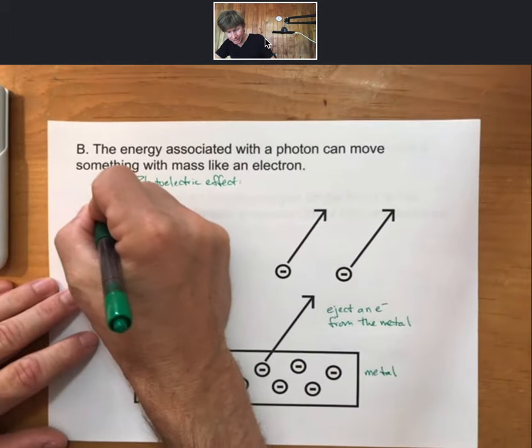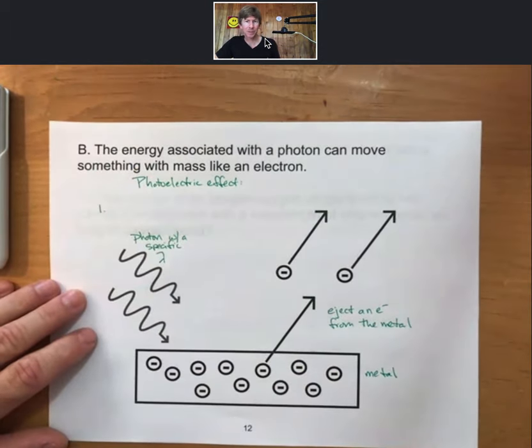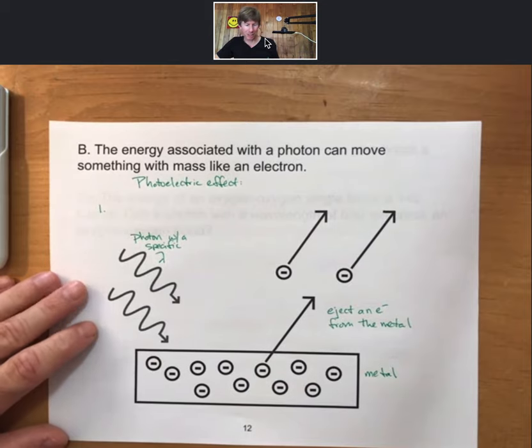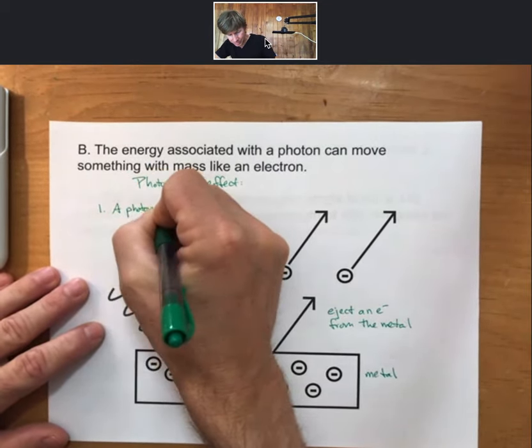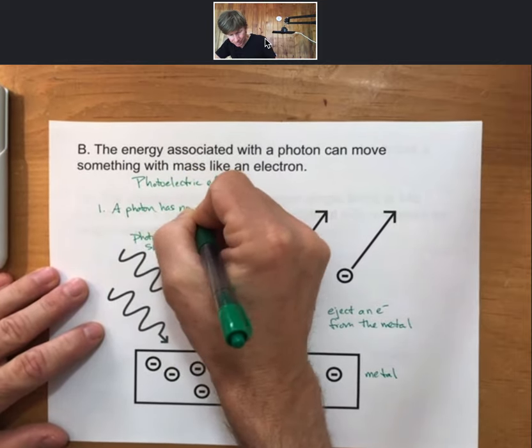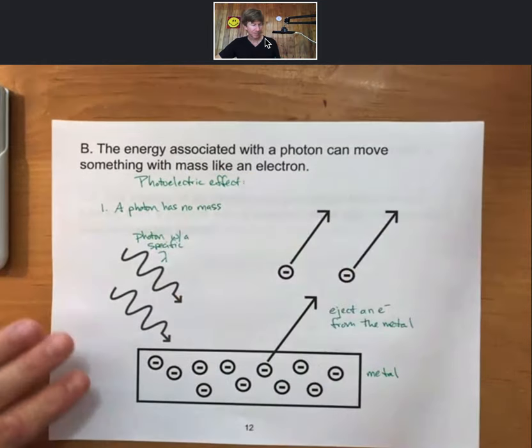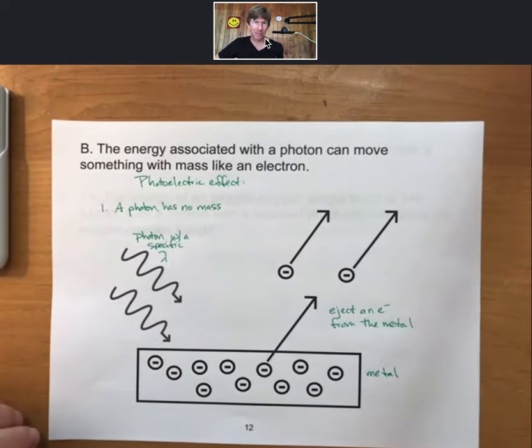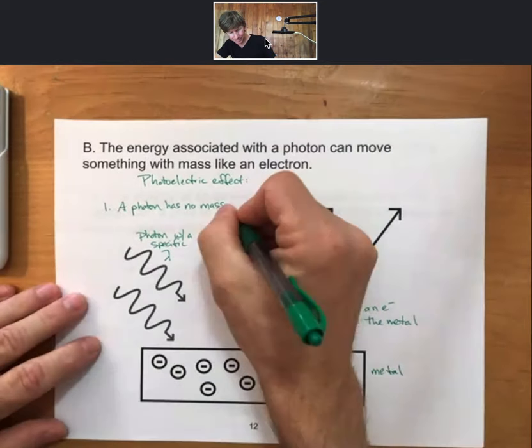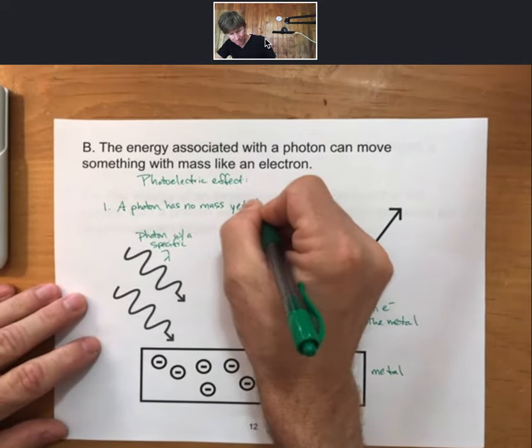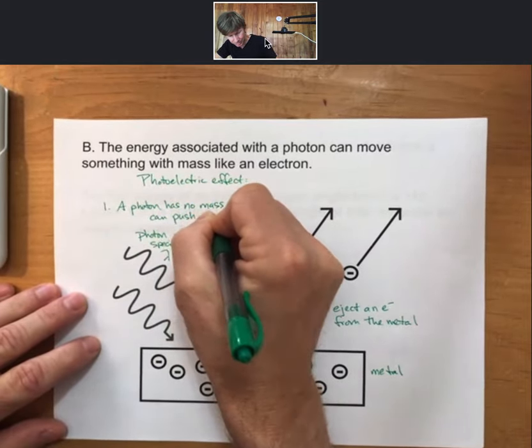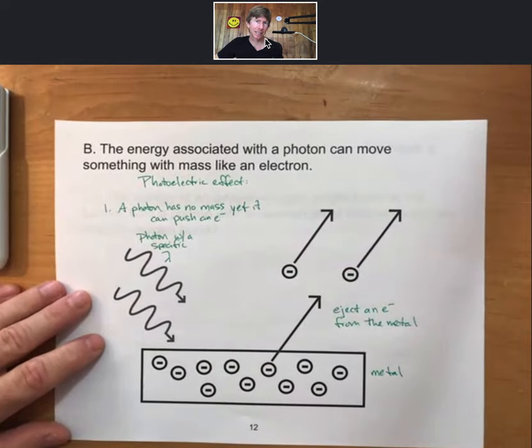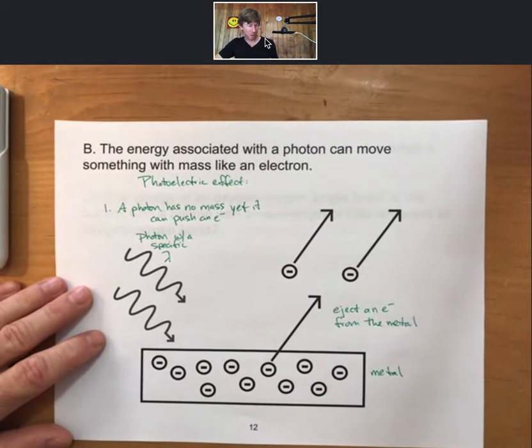Next, we'll call this one, we'll put it right there. So a photon has no mass, yet it can push something. And in this case, it can push an electron to move, to leave a metal.